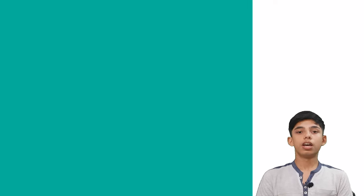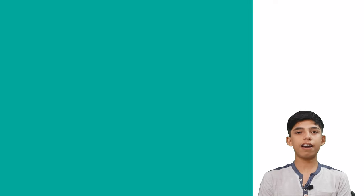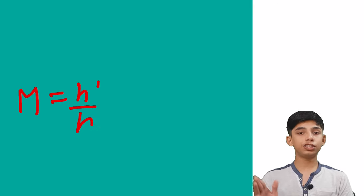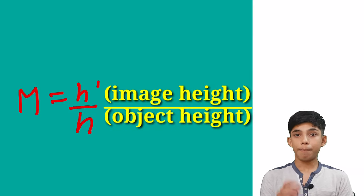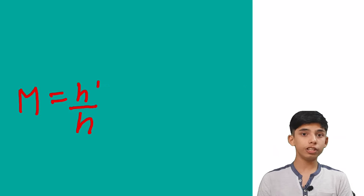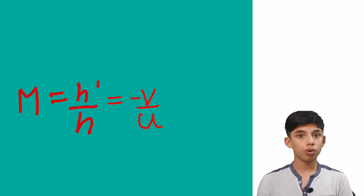Now we have to calculate the size of the image. And for this we have magnification, we're gonna use magnification. So magnification is equal to H dash by H or the image height by the object height. But this is also equal to minus V by U, right? So now we can again replace our values here and get our answer.